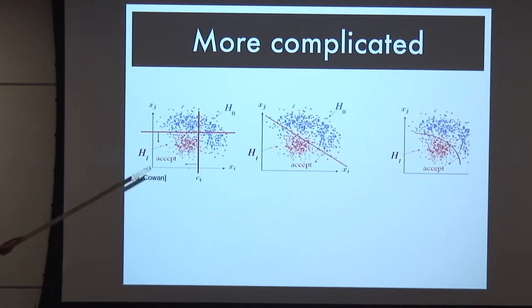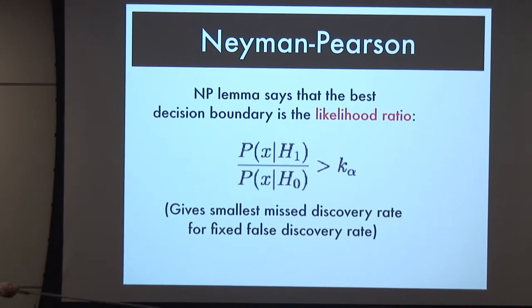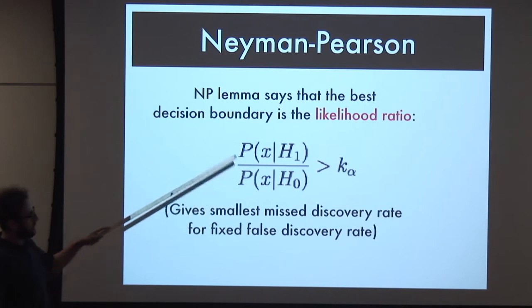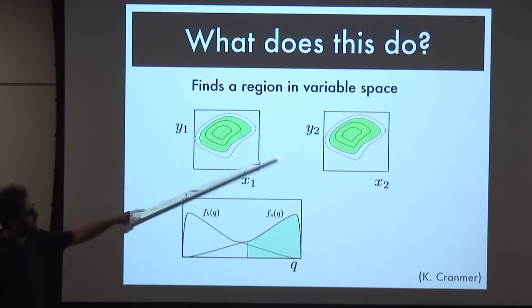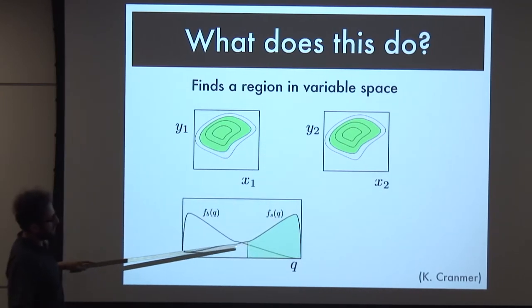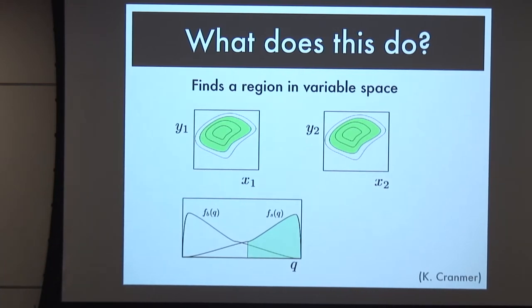As soon as you go to two dimensions for a signal and background distribution, there are lots of different ways you can make this choice, and it becomes quite complicated. But Neyman and Pearson tell us we know how to do this. As long as you can evaluate the likelihood ratio - the probability of X given your hypothesis - you can get the optimal decision value. This is the distribution of the likelihood ratio; put some threshold here, and that maps to a high-dimensional space that says this is where your signal is more likely to live relative to your background.